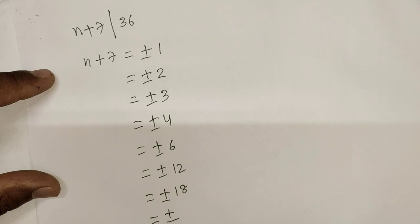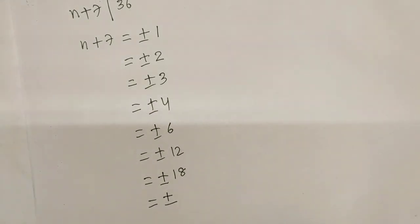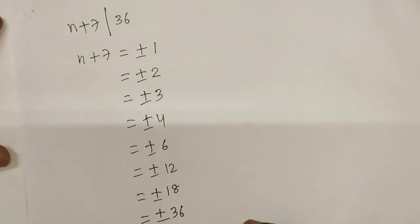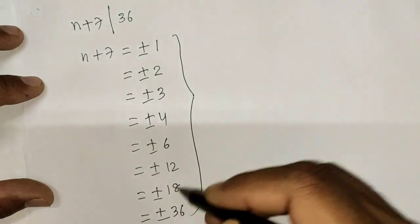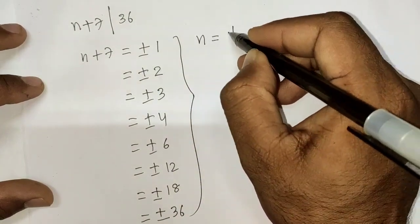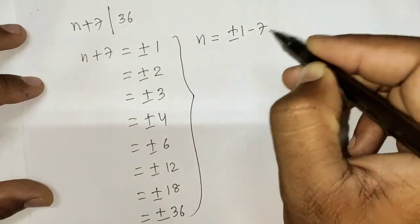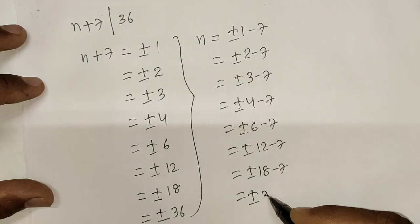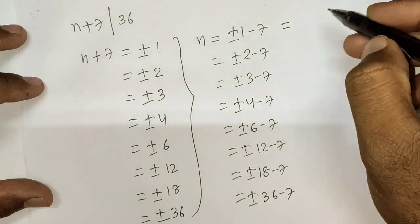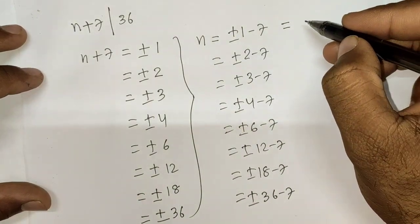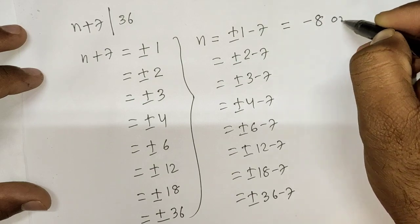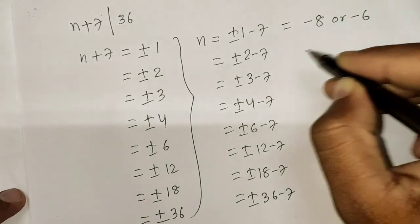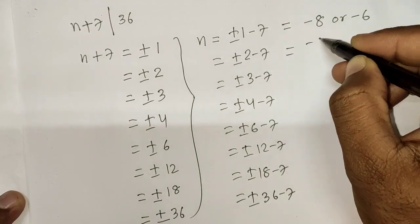Clearly it means n equals ±1 minus 7, ±2 minus 7, ±3 minus 7, ±4 minus 7, ±6 minus 7, ±12 minus 7, ±18 minus 7, ±36 minus 7. Simplifying this gives me +1-7=-6, -1-7=-8, +2-7=-5, -2-7=-9, +3-7=-4, -3-7=-10.